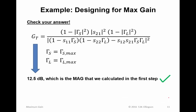Checking your answer: whenever you have a complicated problem with a lot of calculation involved, it's always a good idea to do this. We take those values computed for gamma_S and gamma_L on the previous slide, plug them back into the TPG equation, and see what we get. If you do the math right, you'll get 12.5 dB, which is the maximum gain we calculated in the first step. So everything hangs together — the solution that gives us the reflection coefficients is in fact maximizing gain.